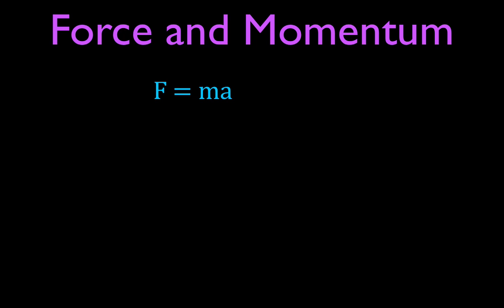For force, we start with Newton's second law: F equals ma. For momentum, the equation is p — p is for momentum — and that is equal to the mass times the velocity. So Newton's second law says force equals mass times acceleration, and the momentum equation says momentum equals mass times velocity.